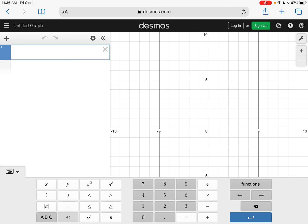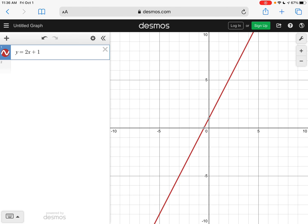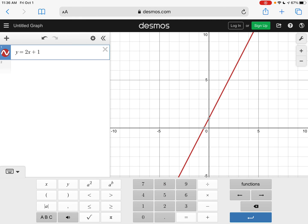I'm going to use the examples that we just learned how to graph together from our graphing slope intercept form notes. In line one I'm going to type in y equals 2x plus 1. You can either use this keyboard at the bottom of the screen or you can type using your keyboard on your computer.